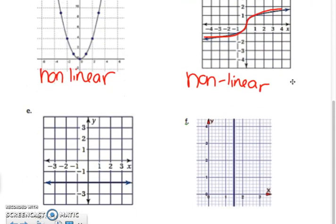E, do you see a line? Yes, so it is linear. F, do you see a line? Yes, so it is linear. Make sure it's a straight line for a graph.